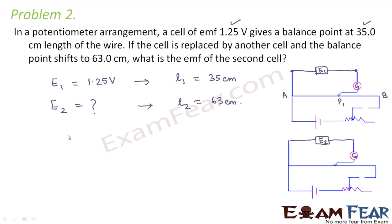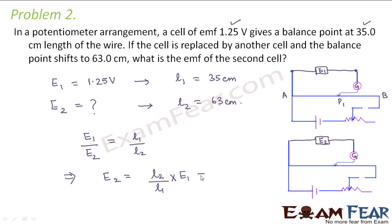It is very easy to calculate the EMF of the second cell. Using a potentiometer, we can compare the EMFs of two cells: E1/E2 = L1/L2. Therefore E2 = (L2/L1) × E1 = (63/35) × 1.25 = 2.25 volts. So this is the EMF of the second cell.